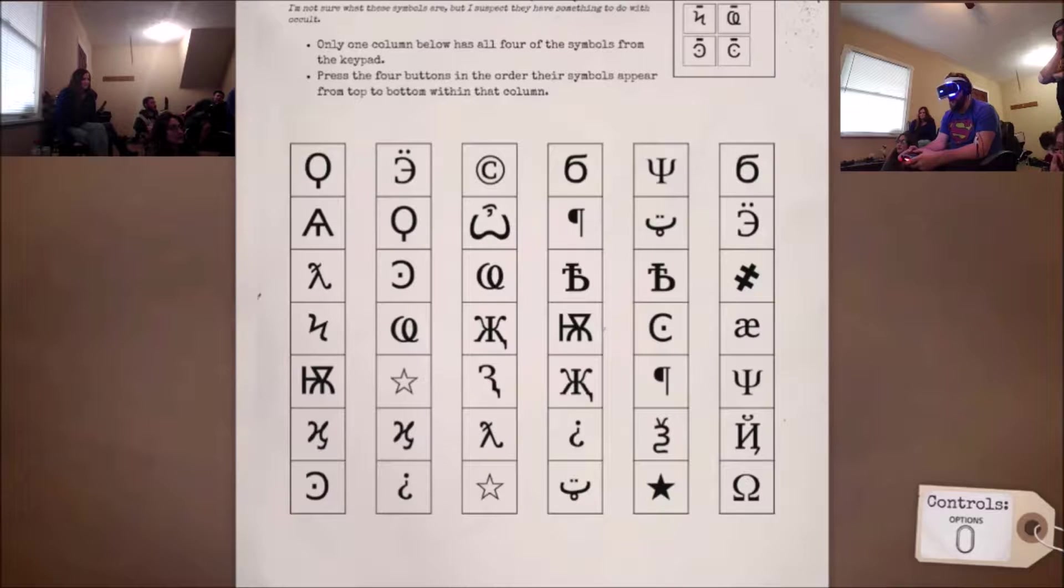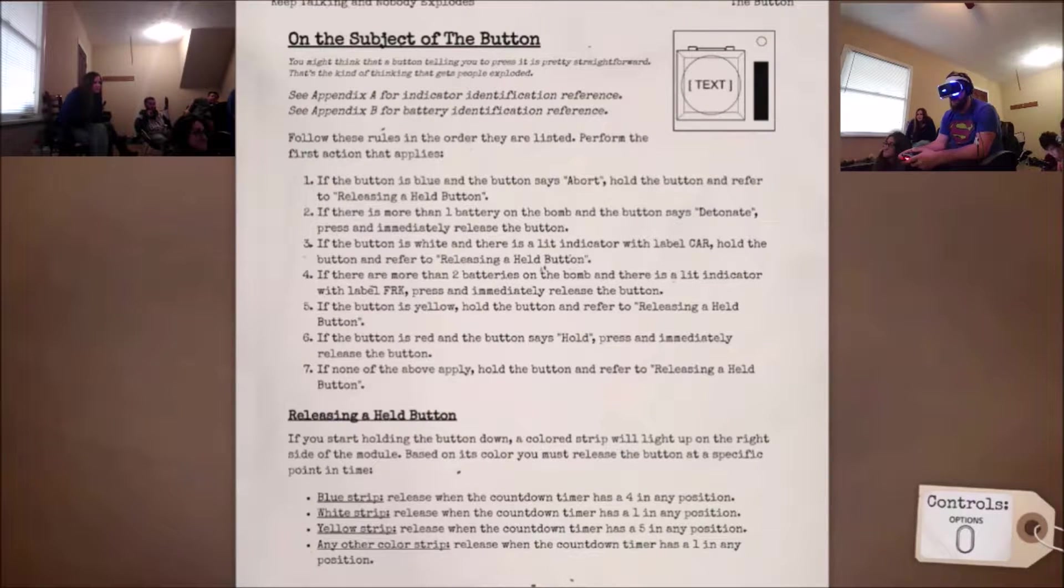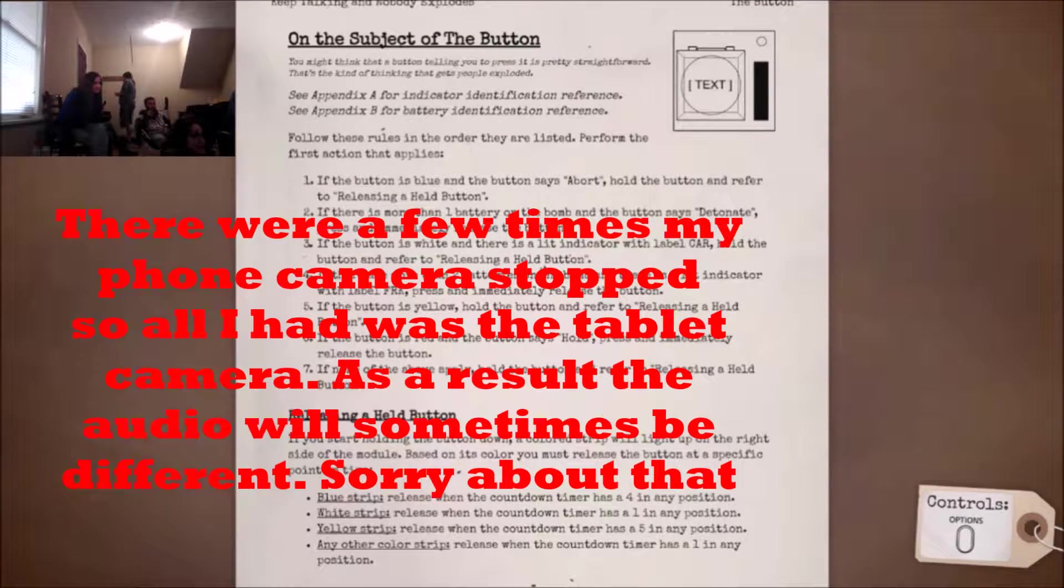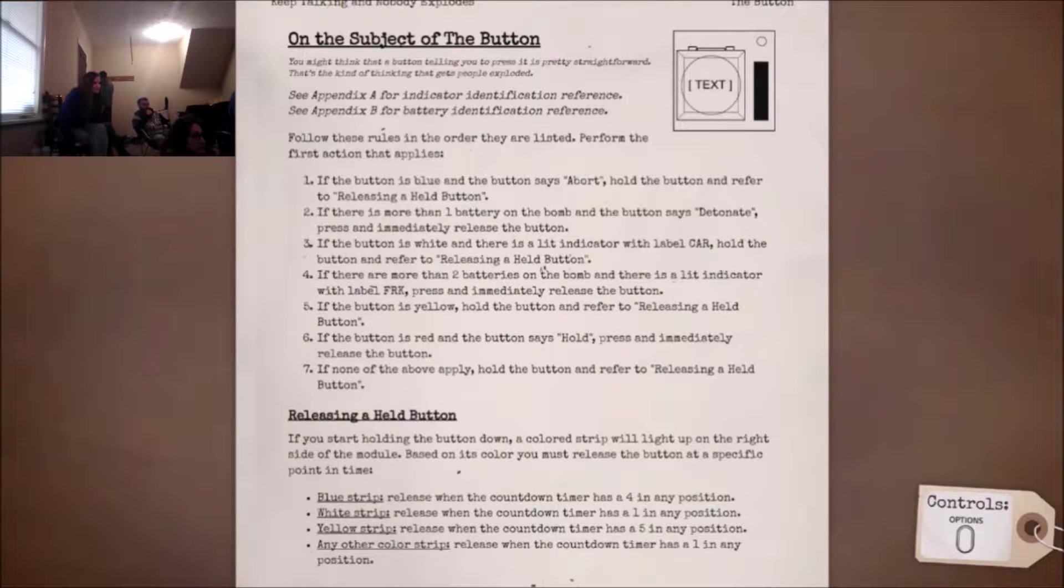Now, I have the button. I have a white button that says press. I have four batteries on the device and the serial number is the last number is a seven. Okay. Hold on. If the button is white. Yes. Is there a lit indicator with the label car? Yes. Okay. And what's the strip again? What strip? The strip, the light, the colored strip that lights up on the right side. So, I hold it? Yes. What does it light up? Yellow. It's yellow. Release when the countdown timer has five in any seconds. We're done. We're done.